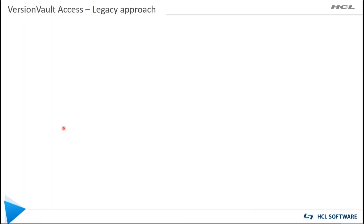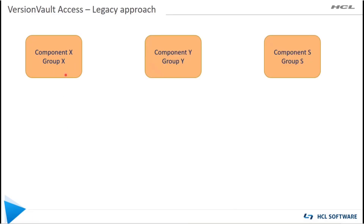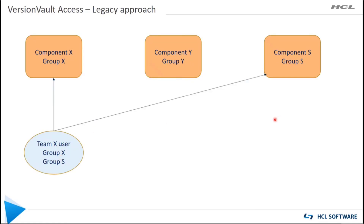Let's see how this VARB access happens in case of a legacy-based approach. Let's take an example of three components X, Y, and S, having the group information of X, Y, and S for the same. A user from Team X who needs checkout and check-in operations on component X and read-only access on component S — we will add him to group X and group S, and we will create a no-checkout trigger for restricting the checkout operations on component S.